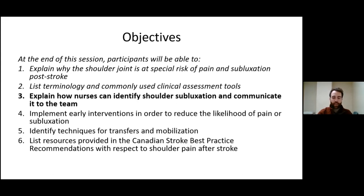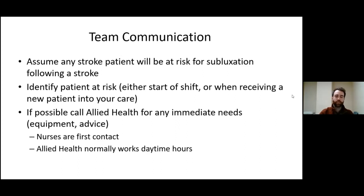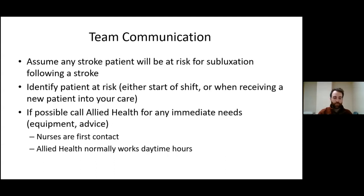Next, we'll go over how nurses can identify shoulder subluxation and communicate it to the team. Assume that any stroke patient will be at risk for subluxation — it is just good, safe practice. When you first start your shift or receive a new patient, identify them as a stroke patient and know they are at risk. If possible, call Allied Health for any immediate needs such as equipment or advice. Nurses happen to be the first point of contact — you're there 24 hours a day, while Allied Health works daytime hours and is with patients for about one hour a day.